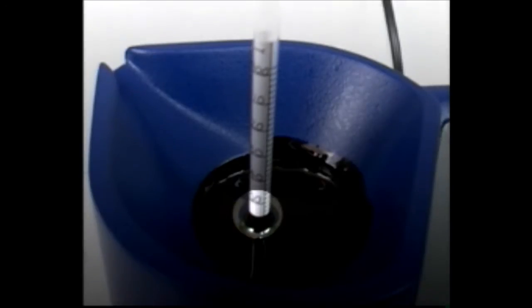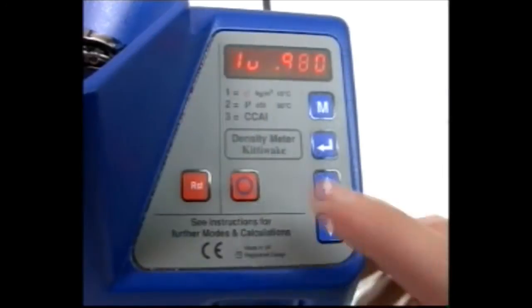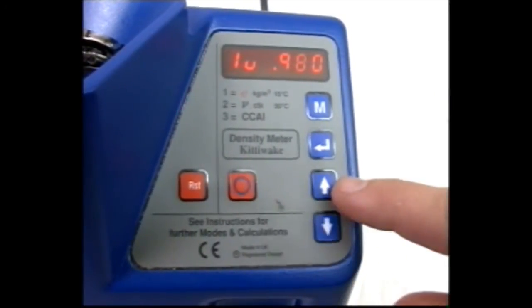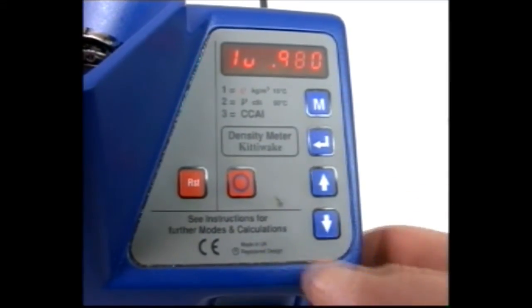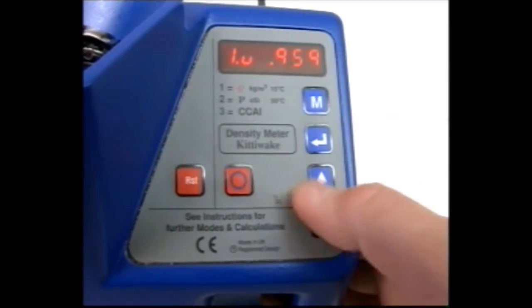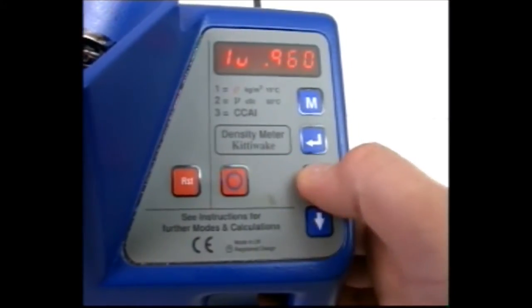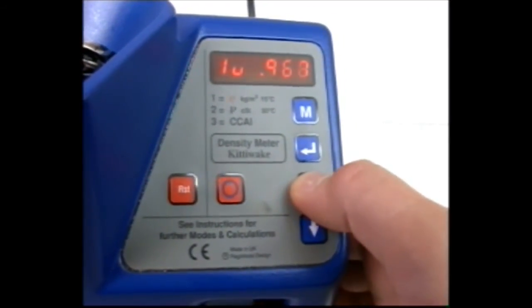Read the hydrometer at the meniscus and enter the uncorrected reading using the speed and arrow keys. Press return to see the density corrected to 15 degrees Celsius in vacuo.